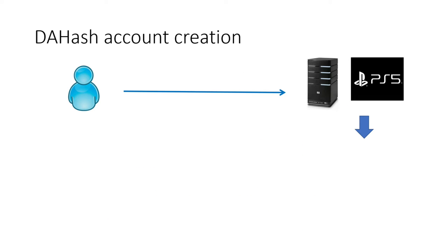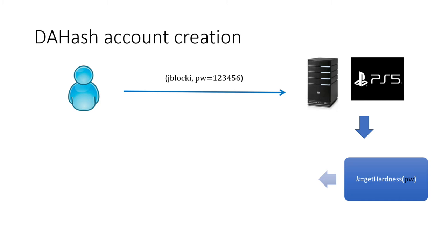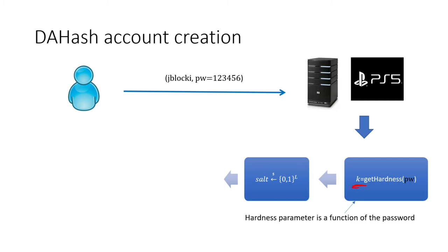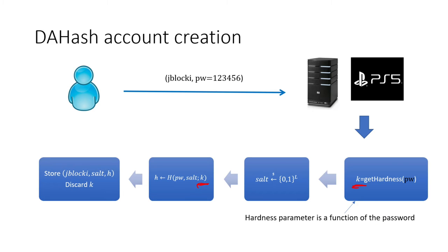Our basic insight is that guessing costs should be dependent on the strength of the password. In the DAHash mechanism, during account creation, PlayStation runs a procedure called GetHardness to get a hash cost parameter k — importantly, this hardness parameter is a function of the actual password chosen. They then pick a salt value and hash the password with the salt and cost parameter k, storing the username, salt, and hash value h. Notably, the hash cost parameter k itself is discarded and not stored on the server.